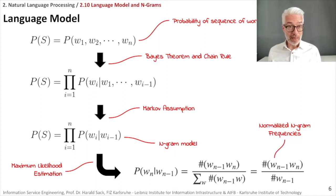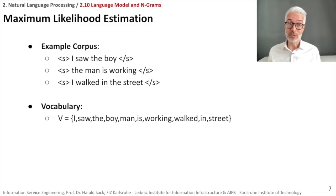In this section of the lecture now we want to apply that on an example. We have an example corpus. Of course this is a toy corpus. It's only small. We have there three sentences: I saw the boy, the man is working, and I walked in the street. And you see here we have two symbols to denote the start and the end of a sentence.